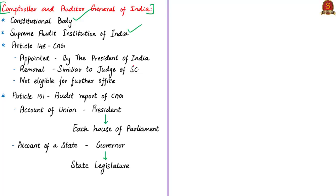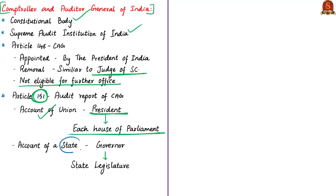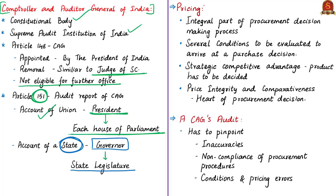The CAG is not eligible for further office under the Government of India or state governments. Under Article 151, audit reports of the CAG relating to accounts of the Union shall be submitted to the President, who shall cause them to be laid before each House of Parliament. Audit reports relating to state accounts shall be submitted to the Governor, who shall cause them to be laid before the state legislature. The author discusses the importance of pricing in the procurement decision-making process, noting that several conditions — quantity, price, installments, after-service conditions, discounts, and commissions — must be evaluated.